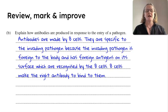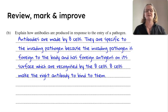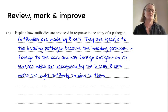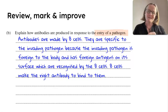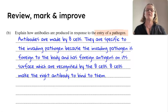Hopefully you noticed that it's not incorrect science here, but we are missing some key facts. We've got antibodies made by B cells — that's good. They are specific, which is great, because the invading pathogen is foreign to the body and has foreign antigens on its surface, which are recognized by the B cells, and the B cells make the right antibodies to bind to them. But what we're missing is what happens when the pathogen first enters — we're missing the idea of T cells being activated. Why do the T cells get activated? Because a dendritic cell has noticed the pathogen first and expressed antigens on its surface. There's a little bit before the B cells making antibodies that you could talk about.